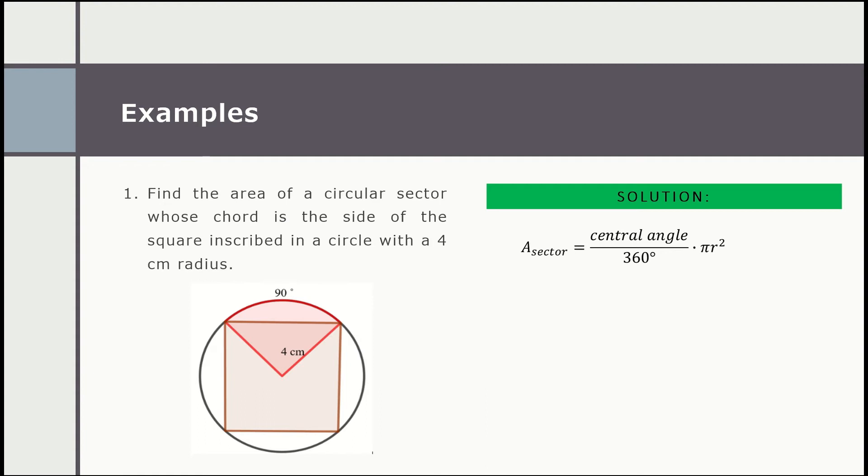And since the measurement of the central angle is the same as its intercepted arc, we have 90 degrees over 360 degrees, multiplied by π, multiplied by the value of r, or the radius, which is 4, then we write squared.